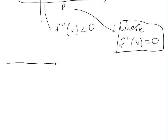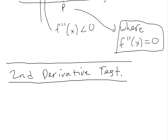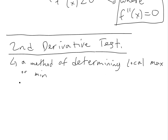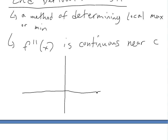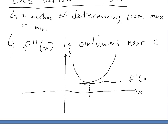Now that we've covered the above, we can get to what the second derivative test is. The second derivative test is a way of determining what the local max or min is — just a method of determining local max or min. It starts off, if you know that f double prime of x is continuous near c, where, say, you had a function graphed out with c being where the derivative is zero — where f prime of c is zero.